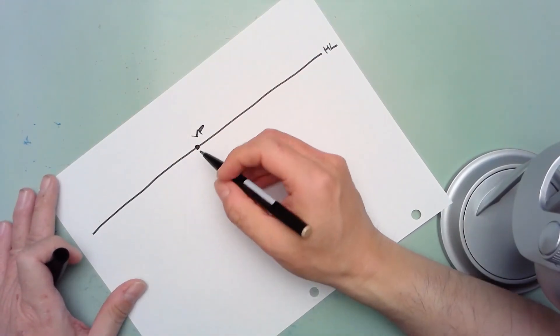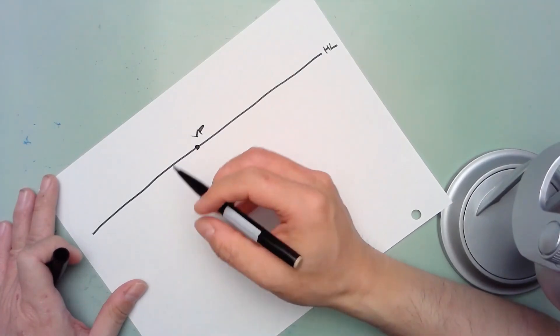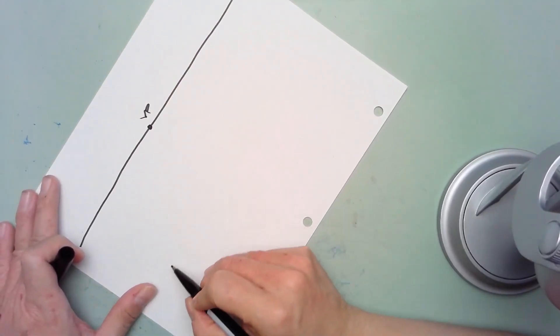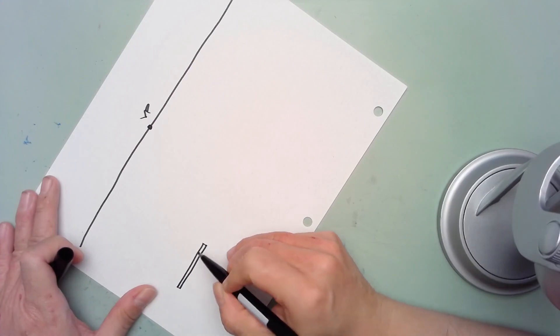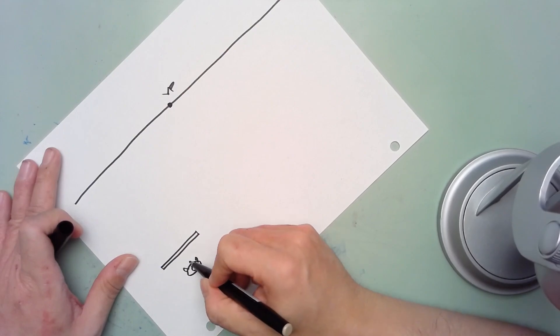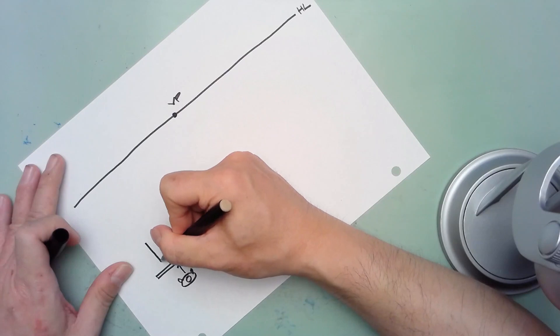In the case of a one-point perspective cube, as the name implies, we only have to worry about one vanishing point. Typically with objects that are in one-point perspective, you can imagine if you were standing in front of a piece of glass and looking this way.